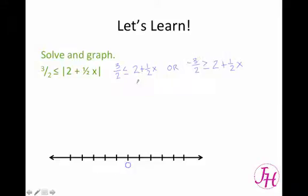So now we're just solving them like we do any other inequality. So we're going to subtract 2. So 3 halves, which is the same thing as 1 and 1 half, minus 2, well that gives you negative 1 half, is less than or equal to 1 half x.